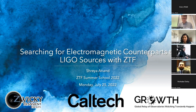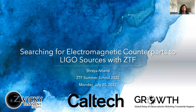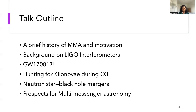Hello everyone, it's a pleasure to be here today and talk about searching for electromagnetic counterparts to LIGO sources with ZTF. I'm a fourth-year graduate student at Caltech transitioning to my fifth year. I'll start with a brief history of multi-messenger astronomy, touch on LIGO interferometer background, then discuss hunting for kilonova during O3 from binary neutron star mergers, neutron star black hole mergers, and finish with some teasers for other topics covered in this school.